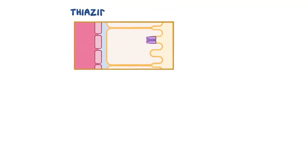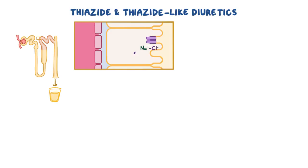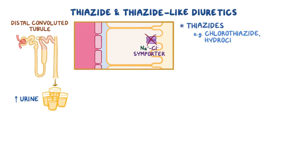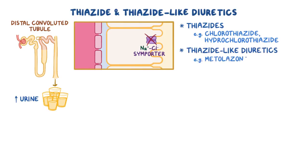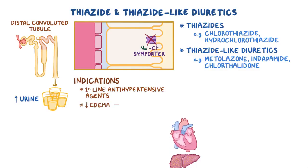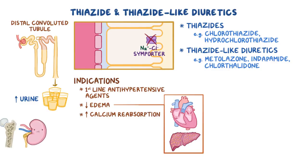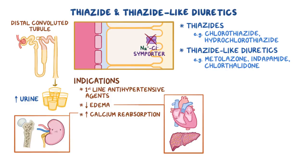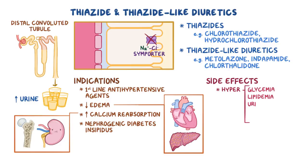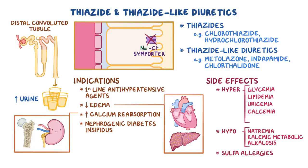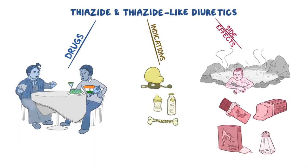As a quick recap: thiazide and thiazide-like diuretics block the sodium chloride symporter in the distal convoluted tubule to increase urine output. The most commonly used thiazides are chlorothiazide and hydrochlorothiazide. The most commonly used thiazide-like diuretics are metolazone, indapamide, and chlorthalidone. They're mostly used as first-line antihypertensive agents, but can also reduce edema in heart failure and cirrhosis. They increase calcium reabsorption to prevent kidney stones and osteoporosis, and can correct imbalances in nephrogenic diabetes insipidus. Common side effects include hyperglycemia, hyperlipidemia, hyperuricemia, hypercalcemia, hyponatremia, hypokalemic metabolic alkalosis, and sulfa allergies. There's also a mind map with all the mnemonics — pause the video to test yourself.